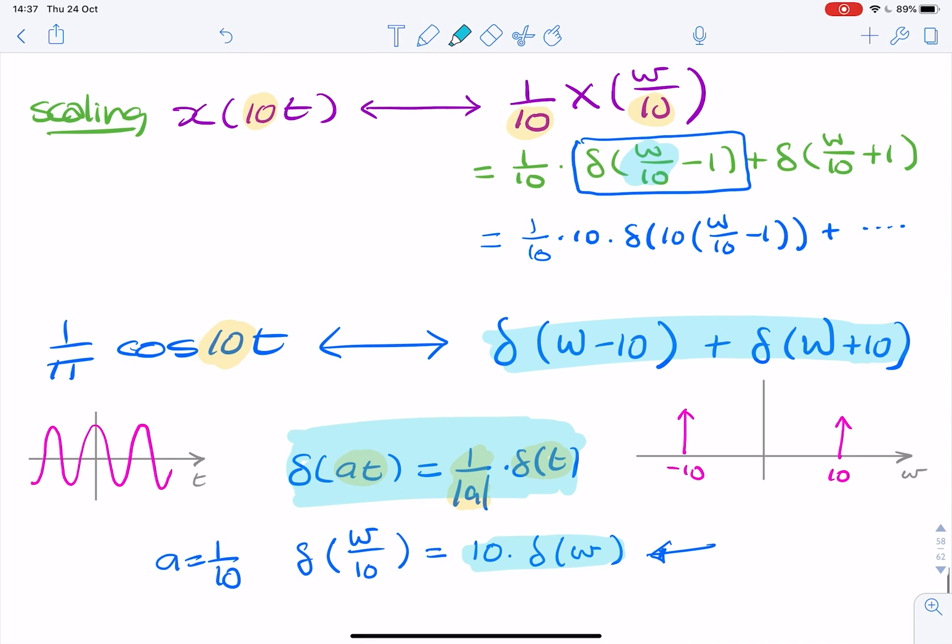So actually, whether you use scaling or you use the Fourier transform pair table, you'll get the same result. The difference is because of this relationship here with the delta Dirac function when scaled needs its area normalized by dividing by the absolute value of the scaling constant a.